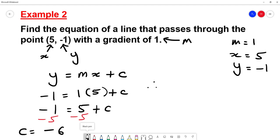So therefore, in the form of Y = MX + C, we can say Y = 1X, because M is 1. So 1X. And our corresponding value for C is -6. So our final equation is Y = 1X - 6.